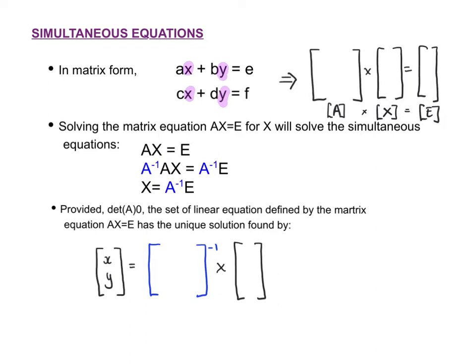We're going to solve those equations using matrices, and you need to know how to set them up because often the questions ask you to show the setup and then show how it's solved. The letters A, B, C, D, E, and F are going to be numbers — for example it might be 2X plus 3Y equals 5.